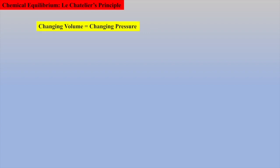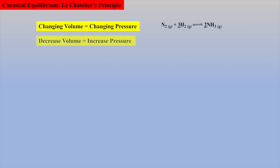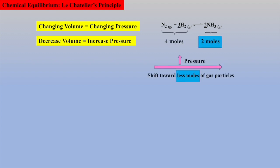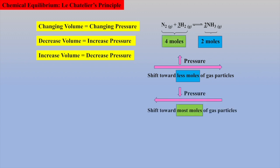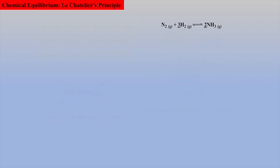We can also disrupt the dynamic equilibrium of gaseous particles by changing the pressure, which may be accomplished by changing the volume. For example, if the Haber reaction is at equilibrium and the volume of the reaction vessel is reduced, the pressure will increase. Le Chatelier's principle states the equilibrium will shift toward less moles of gas, towards products. Conversely, if the volume is expanded or pressure decreased, the equilibrium will shift toward the side with the greatest number of moles. But do we need to memorize this? Let's mathematically prove Le Chatelier's prediction.